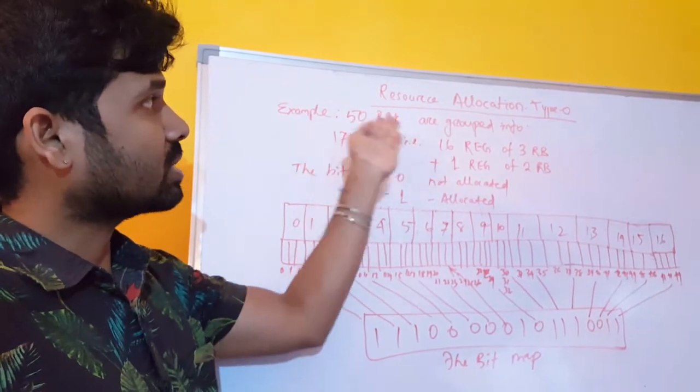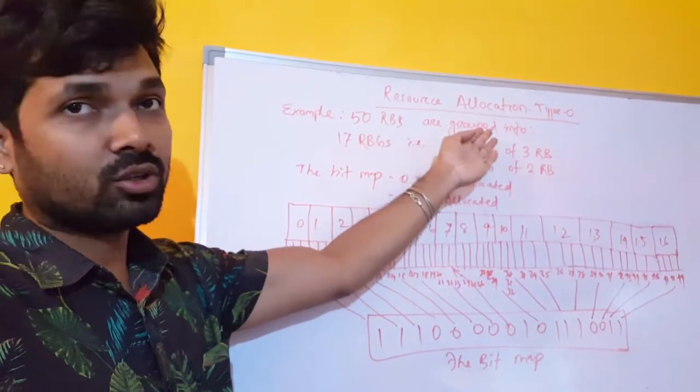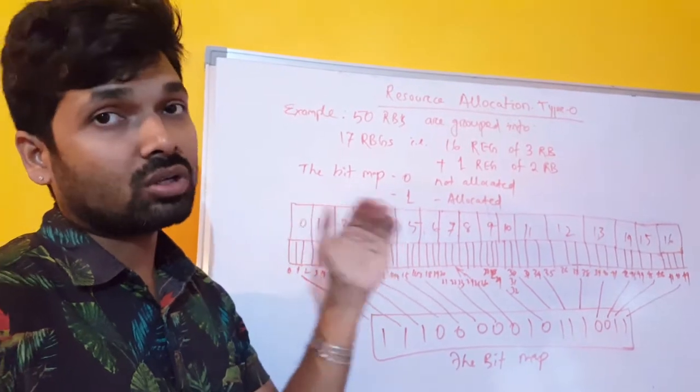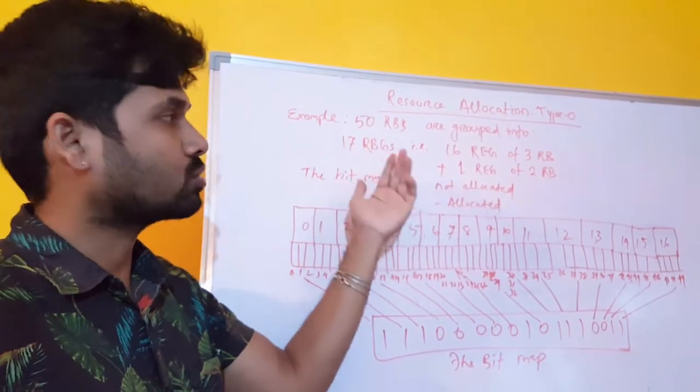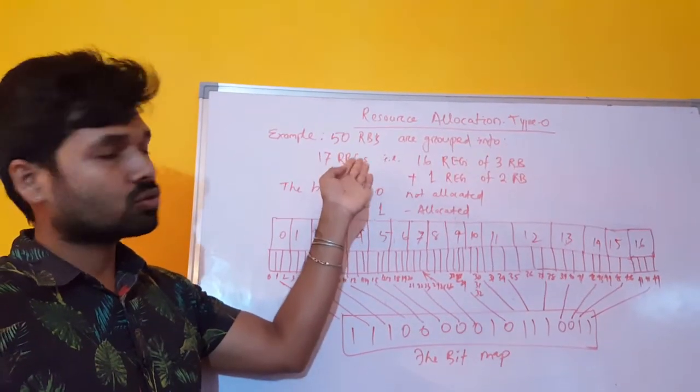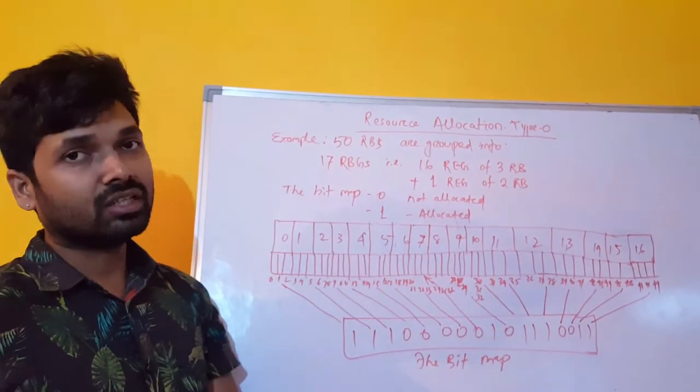Example is 50 resource blocks are grouped into 17 resource block groups. So we have divided 50 resource blocks into 17 groups.